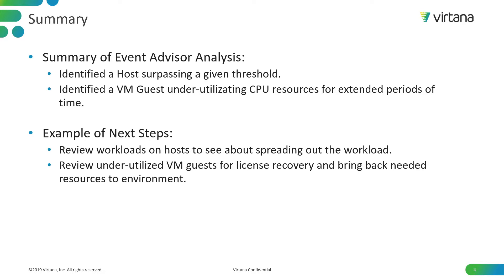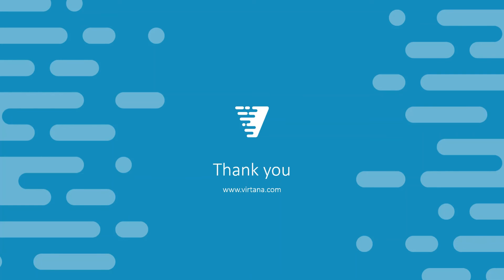What are some examples of next steps you could take with this data? For the overutilization, you could review the workload on the host and see about spreading the workload out across multiple ports, multiple HBAs, and generally change the configuration of the host to spread out that workload and mitigate issues where too many resources are being used in one situation. For the underutilized resources, you can leverage that data to see which guests are not being utilized appropriately and retire them if necessary if they're truly not being used in the environment. Thank you for your time today. If you have any questions, please let us know.